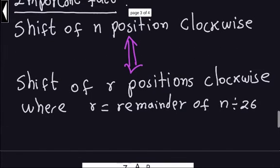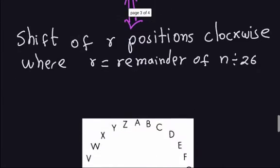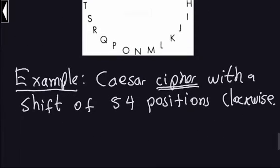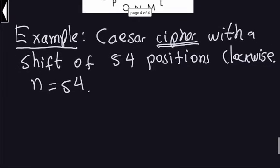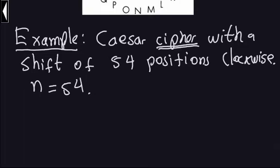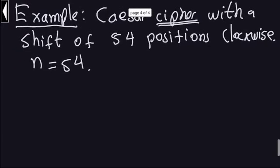Remember, according to the fact we saw earlier, whenever you have a shift of n positions clockwise, that's exactly the same as shifting r positions, where r is the remainder of n divided by 26. In this particular example, n is 54. You can shift 54 positions clockwise, or you can do something better: take 54 divided by 26 and find the remainder.